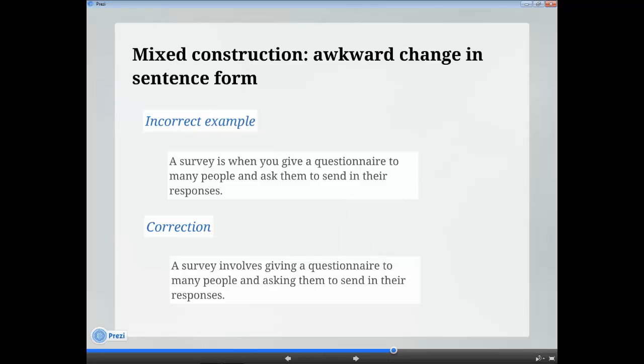Mixed construction involves starting a sentence with one form and then changing it at some point in the same sentence. Incorrect example: A survey is when you give a questionnaire to many people and ask them to send in their responses. Note that the sentence starts off with a phrase that suggests a description, a survey is, but then switches to a narrative form, when you give a questionnaire. Correction: A survey involves giving a questionnaire to many people and asking them to send in their responses.